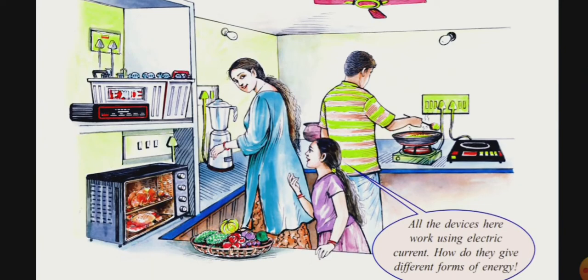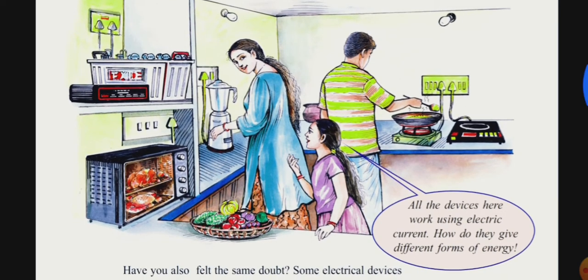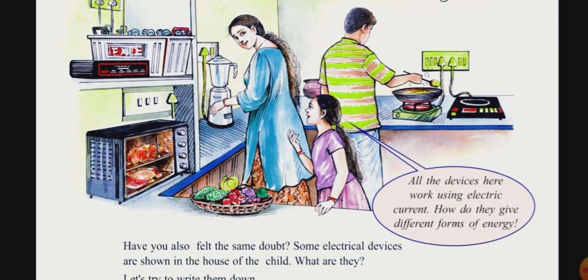You will see a textbook here. Here is a house. This house has various electrical devices. All devices here work using electric current. How do they give different forms of energy? Now we are learning the same things — all these forms of energy conversion.